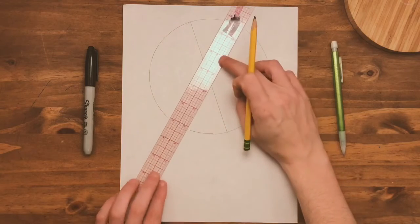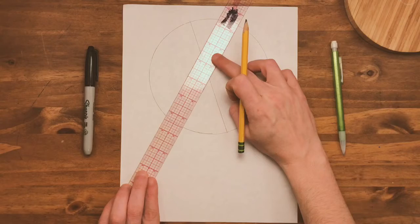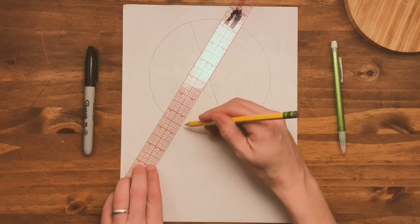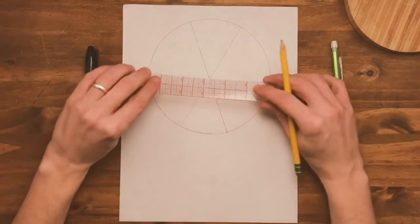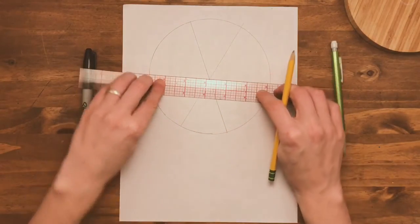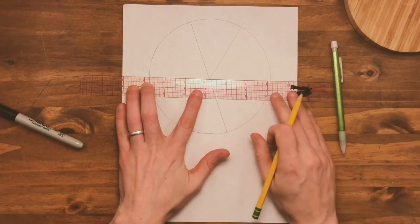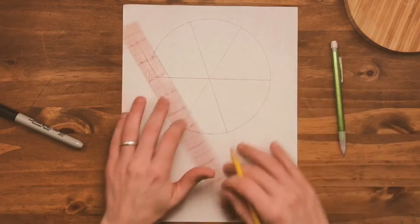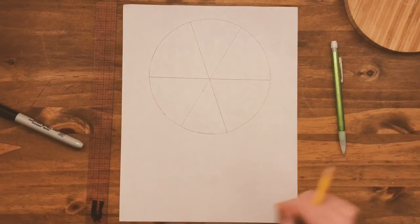Take your ruler, rotate it, and do the same thing on the other side. Next, you will take your ruler and go straight down the center. Making sure my ruler intersects where these two lines come together. And you should have one, two, three, four, five, six sections.